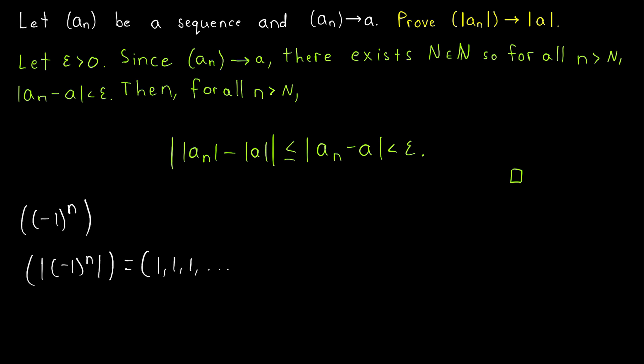And so, this converges to, you could say, the absolute value of 1. But just because the absolute values of the sequence converge to the absolute value of 1, that certainly does not tell us that the original sequence converges to 1. Since the original sequence is oscillating between negative 1 and positive 1.